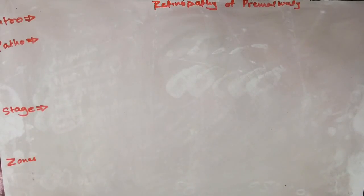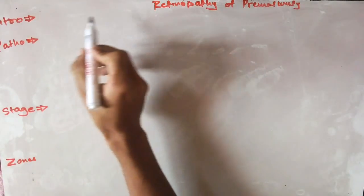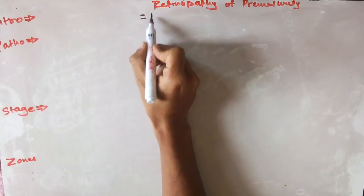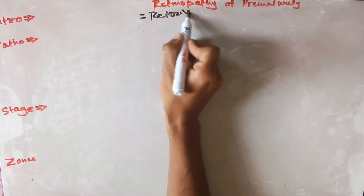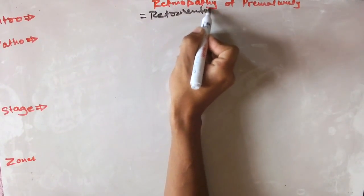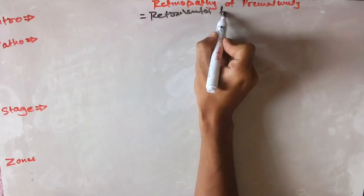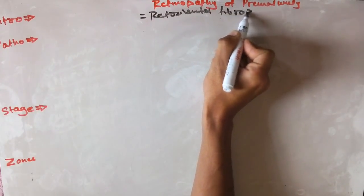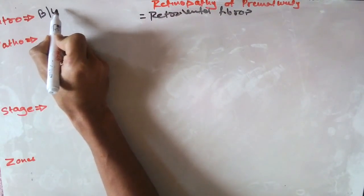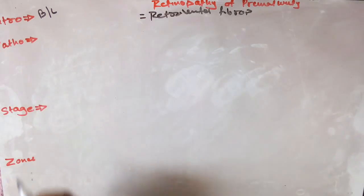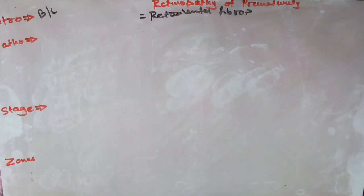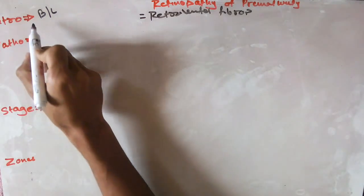Retinopathy of prematurity — earlier it was also known as retrolental fibroplasia. This is a bilateral proliferative disorder of the retina.